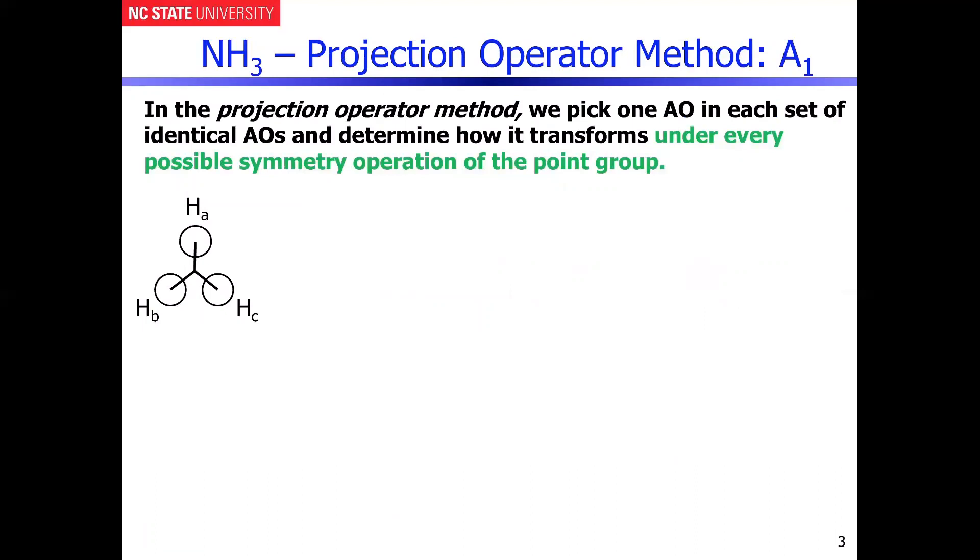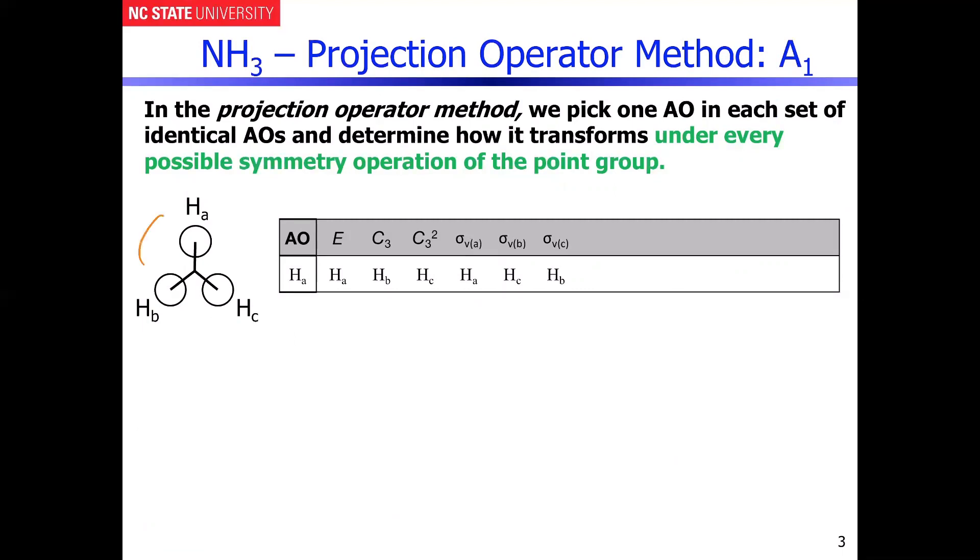So those are the group orbital symmetries. And then, of course, if you do the projection operator method like we've done before, we can project HA under all the operations of the group. And remember, this is exactly what we've done before. C3 will bring HA to HB. You do C3 twice, it'll bring HA to HC. So I think you can very clearly see that's what we just did. And then I'm picking the mirror planes that run down through the middle here. HA will remain HA if you project through there.